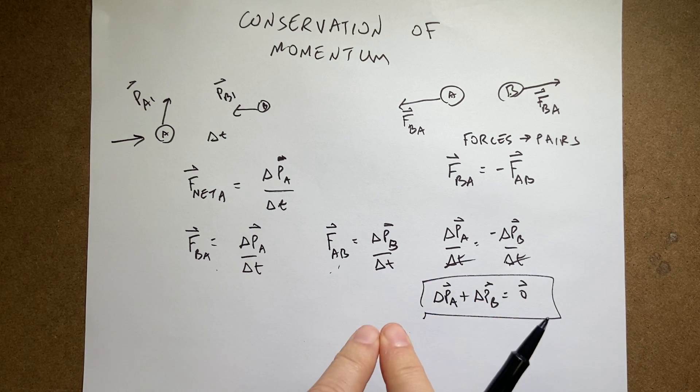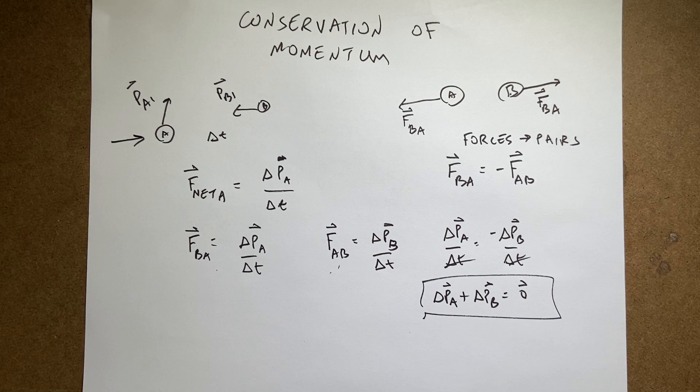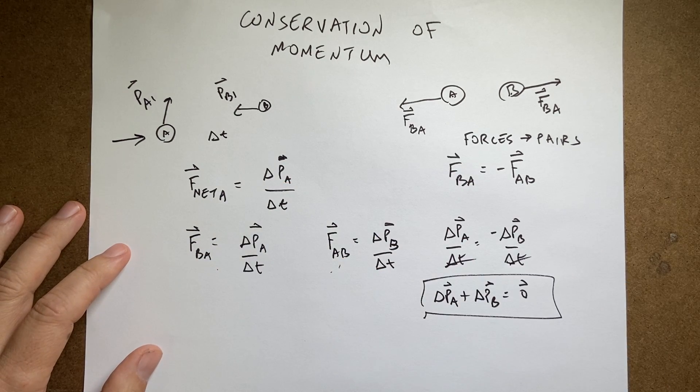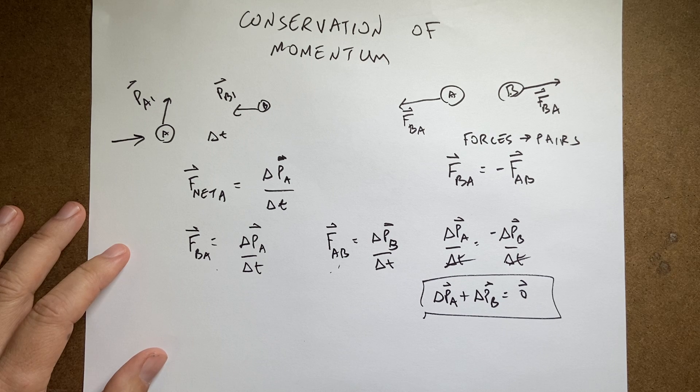So, momentum is only conserved if you pick a system with no external forces and it doesn't even have to be two particles. It could be as many as you want. You can show that this works for as many particles as you want. Okay, that's enough.